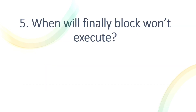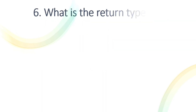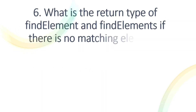When will the finally block not execute? Although the finally block always executes after the try-catch block, there are some cases where it won't. First, if the JVM stops due to some sudden behavior. Second, when you call System.exit() — calling this function from the System class will prevent the finally block from executing.